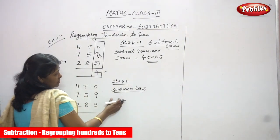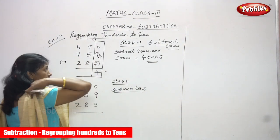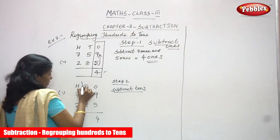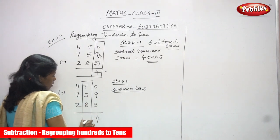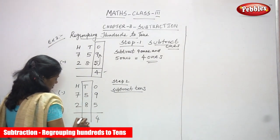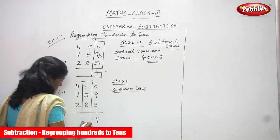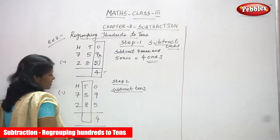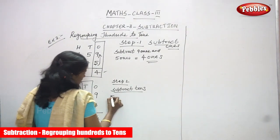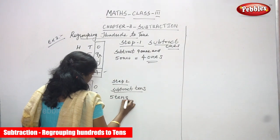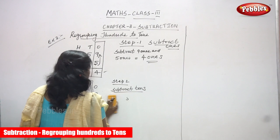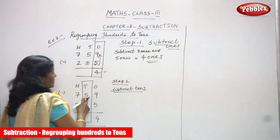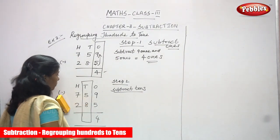Step one is over. Write four as the answer. Now, step two: subtract tens. The heading is regrouping hundreds to tens. The numbers in the tens place are five and eight. Five is the lesser number and eight is the greater number — you can't subtract, so five tens is not enough.